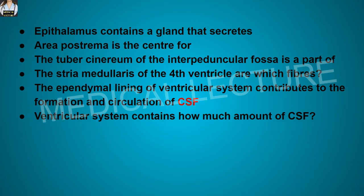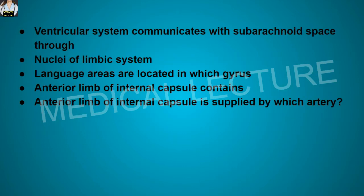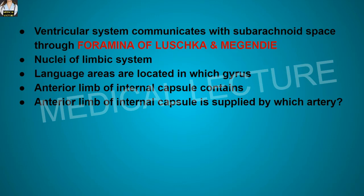The ventricular system contains about 30 mL of CSF. The ventricular system communicates with the subarachnoid space through the foramina of Luschka and the foramen of Magendie.